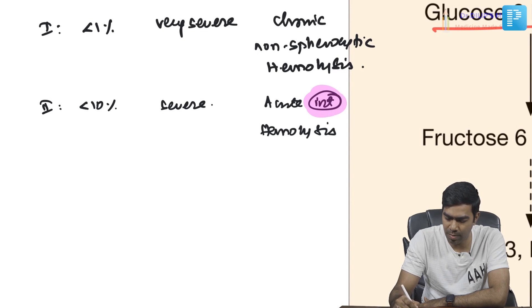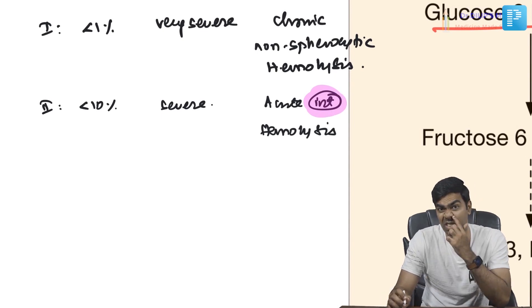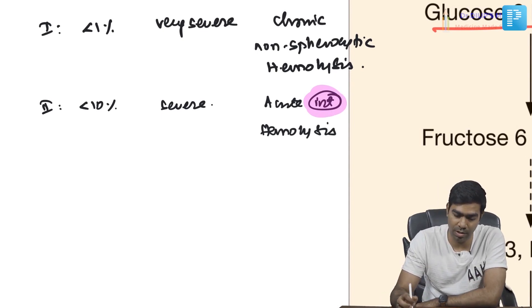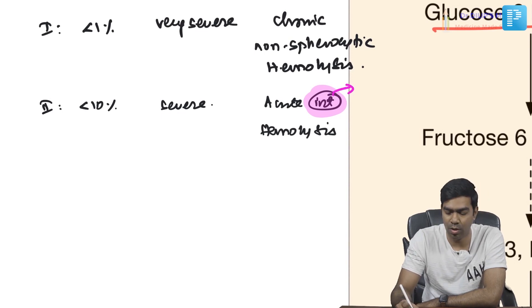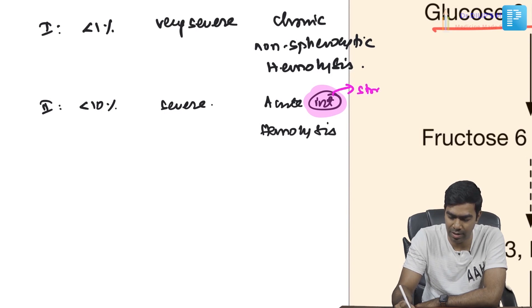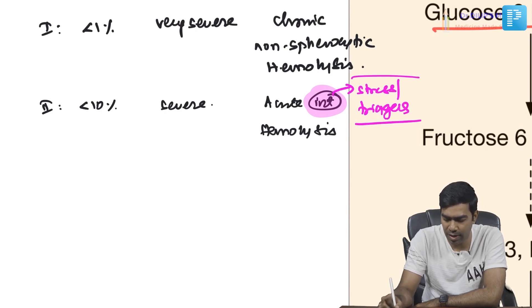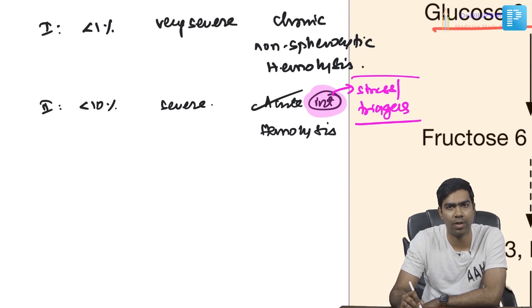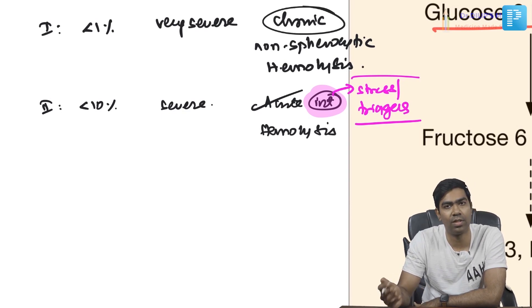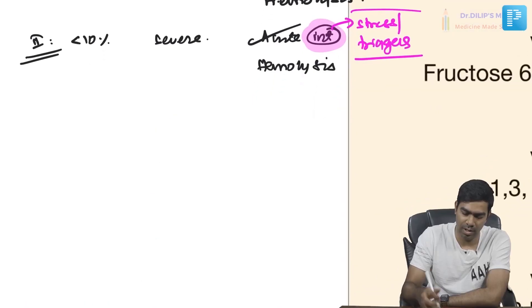Class 2 causes only acute intermittent hemolytic anemia. The hemolysis is intermittent because it is triggered by specific oxidant stresses or events. Only when triggered does hemolysis occur; otherwise the patient is normal. Class 1 has chronic ongoing hemolysis with or without triggers, whereas Class 2 only hemolyzes during acute attacks.